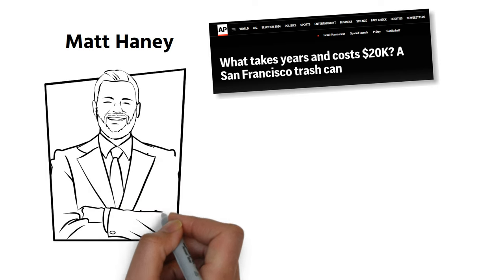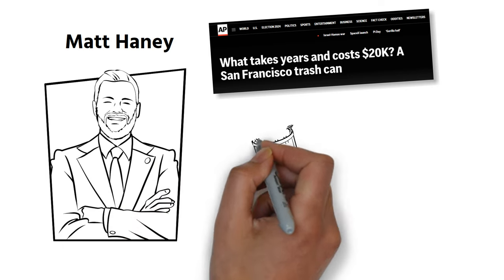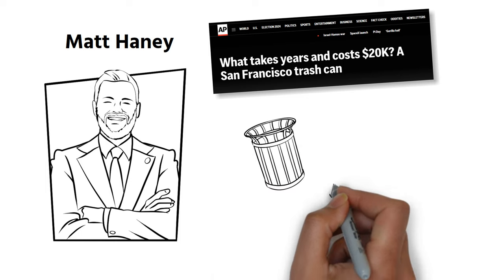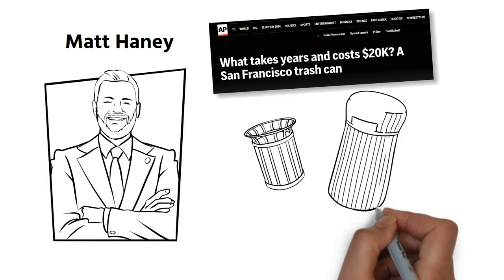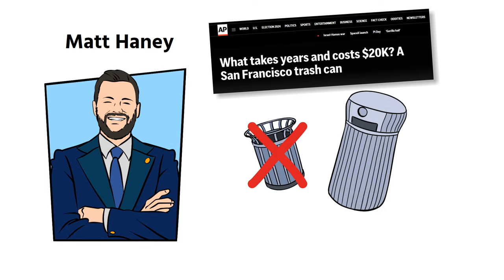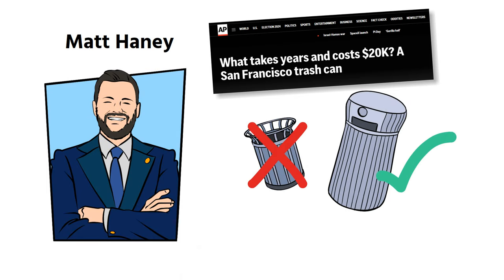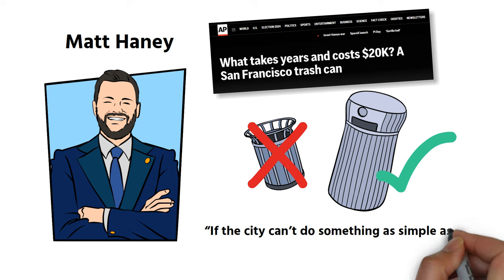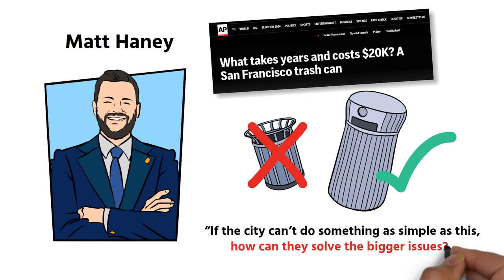I think most people would say just replace the cans with cans that we know work in other cities, he said. A trash can is one of the most basic functions of city governance. And if the city can't do something as simple as this, how can they solve the bigger issues?